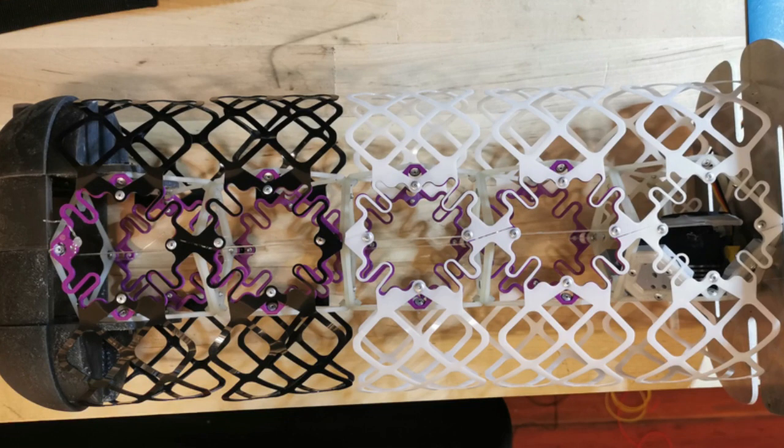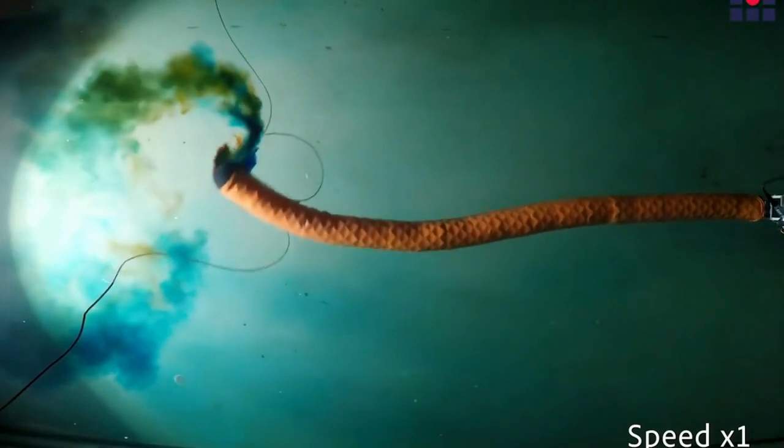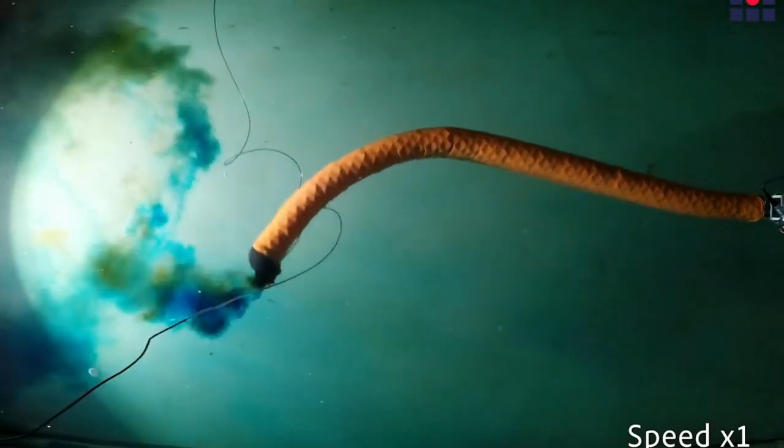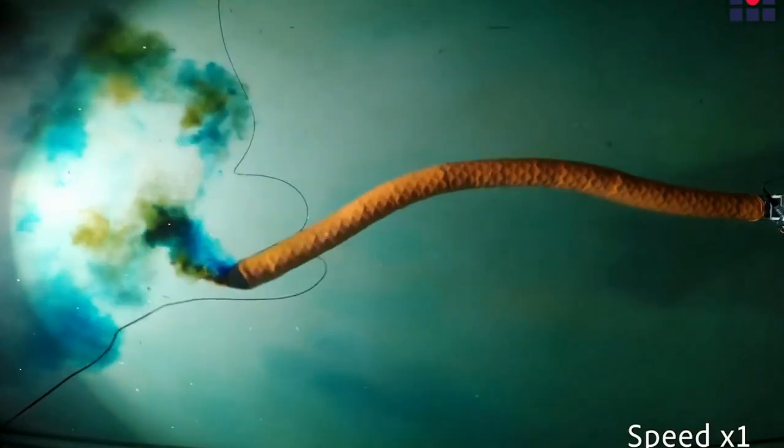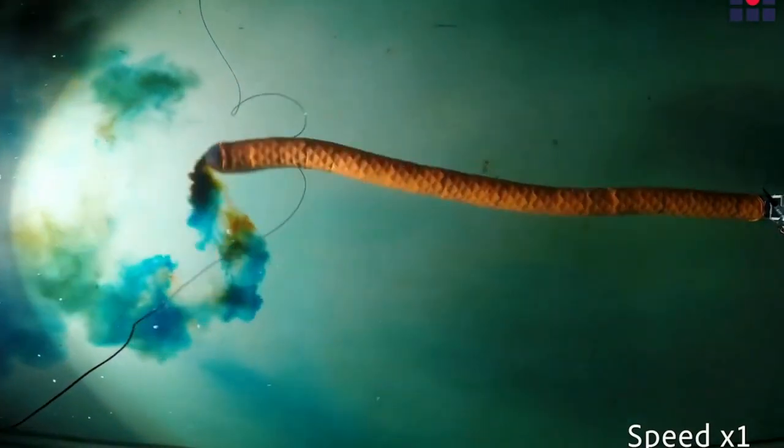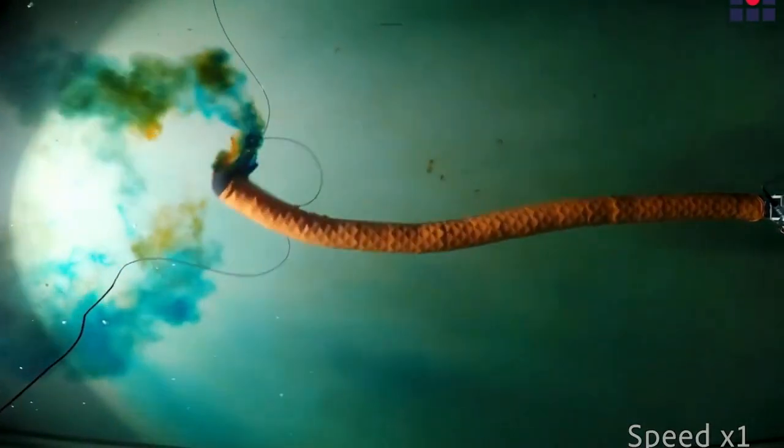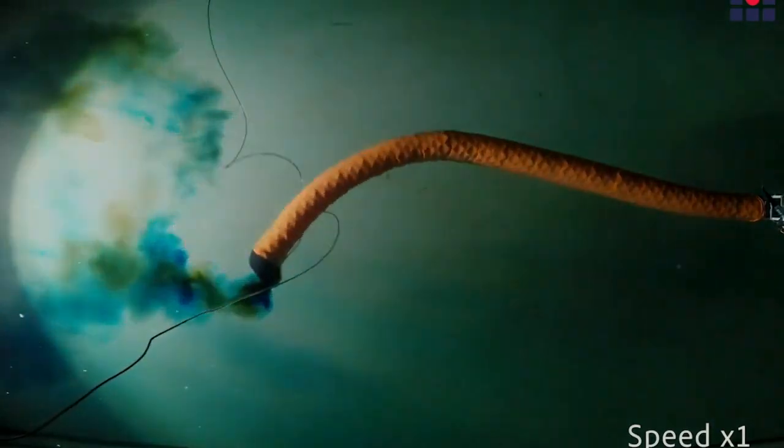In one of the devices produced by the team, the voxels are attached end-to-end in a long row to form a meter-long snake-like structure. The body is made up of four segments, each consisting of five voxels with an actuator in the center that can pull a wire attached to each of the two voxels on either side, contracting them and causing the structure to bend.